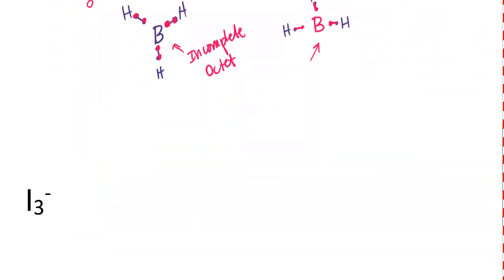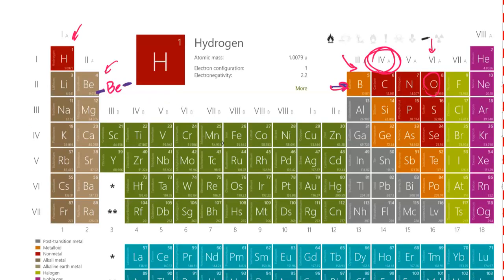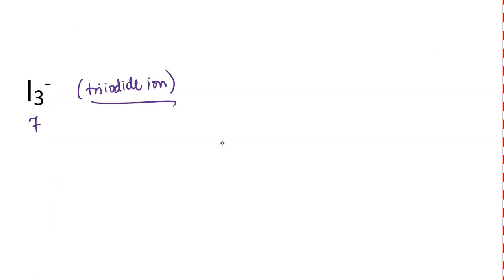What about this structure? This looks a little bit more difficult. This is the triiodide ion. We're going to follow our same scheme. Iodine is in group 17, so that means there's seven valence electrons, and there's three of them. So that's 21 valence electrons. But this is going to be an ion with a negative charge, so I have to add one more valence electron per negative charge, for a total of 22 valence electrons.